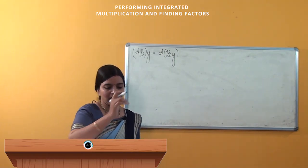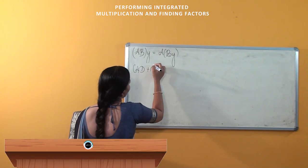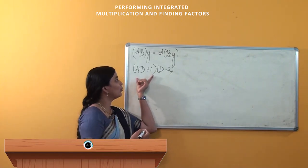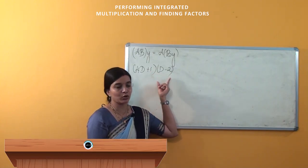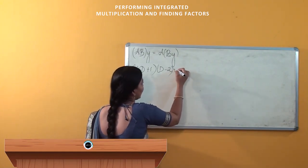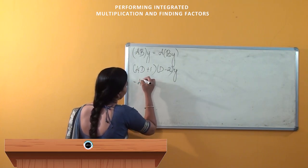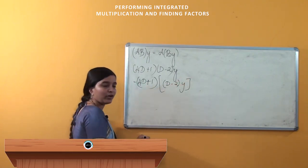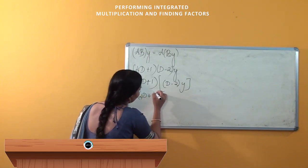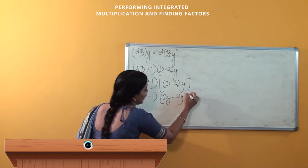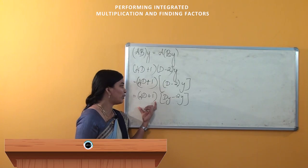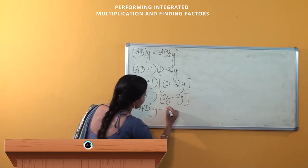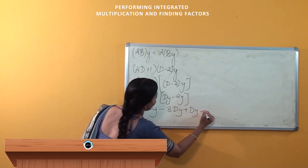Now we will perform integrated multiplication. The operator given is (4D + 1)(D − 2). We consider y, so this is nothing but (4D + 1)(D − 2) into y. When we perform the multiplication, we get (4D + 1) into (Dy − 2y). Next, we perform multiplication between (4D + 1) and (Dy − 2y), giving us 4D²y − 8Dy + Dy − 2y.